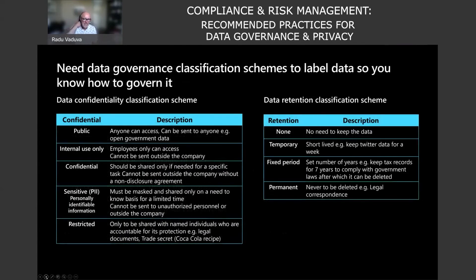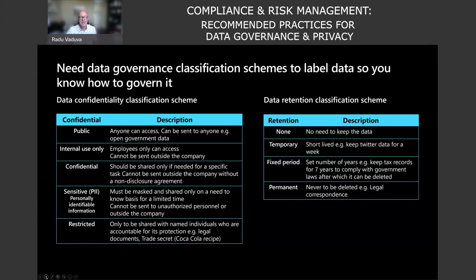How do you classify data as PII, a trade secret, or intellectual property specific to the organization? All of these become very important when you look at what you need to govern. Many organizations create a data classification schema that describes data confidentiality — that's the table on the left-hand side, and it's just an example. There's also a retention classification schema. Sometimes they go hand in hand, but most often in organizations those two are separate functions sitting in separate groups.